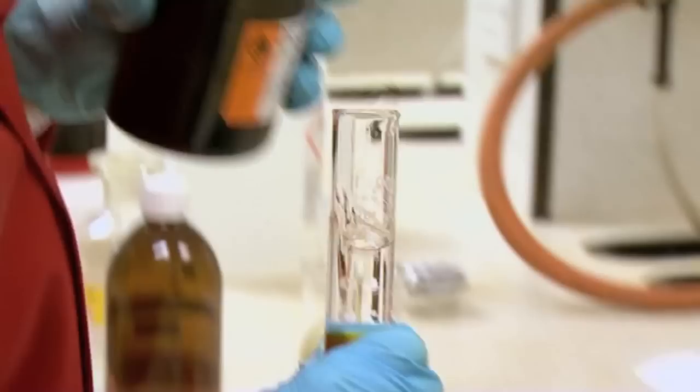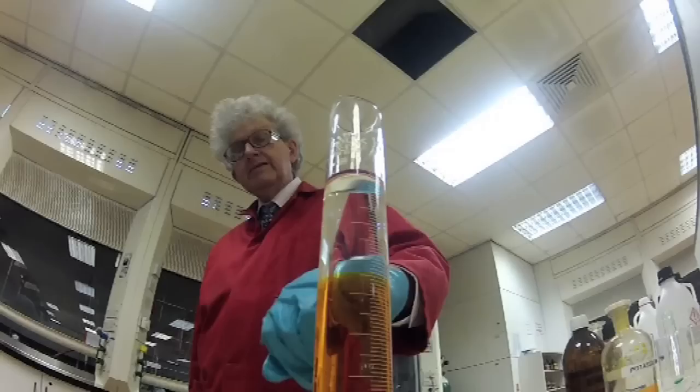So if you look now, you can see there's a colorless layer here of ether with dichromate underneath. So now, I put some hydrogen peroxide into this small beaker and we'll add a little and see what happens.